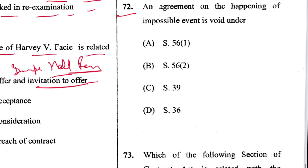Question 72: An agreement on the happening of an impossible event is void under Section 36. D is the answer.